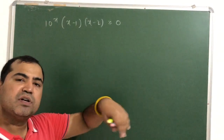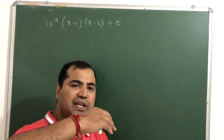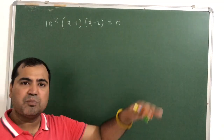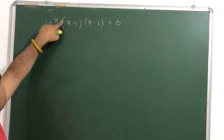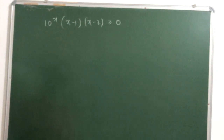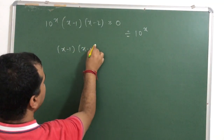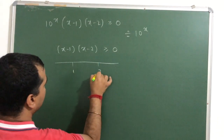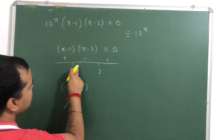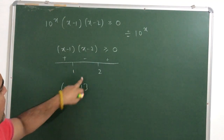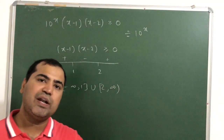Let's see another example: 10 raised to x, times (x minus 1), times (x minus 2), greater than or equal to 0. Now instead of e, we have 10. The graph of 10 raised to x behaves similarly to e raised to x — it is just amplified. It also takes only positive values and will never take any negative number. So I divide by 10 raised to x, giving (x minus 1)(x minus 2) ≥ 0. Roots are 1 and 2, with signs plus, minus, plus — so the answer is minus infinity to 1 (closed), union 2 to infinity (closed).